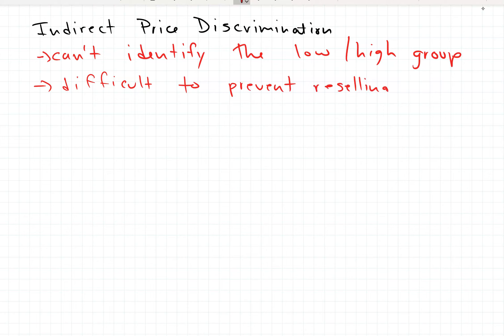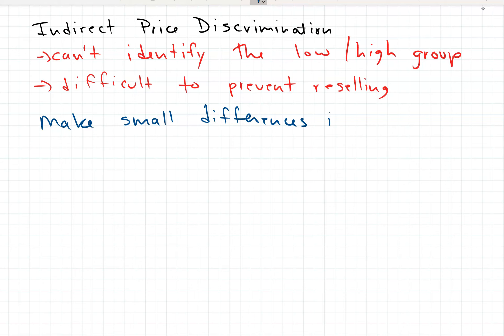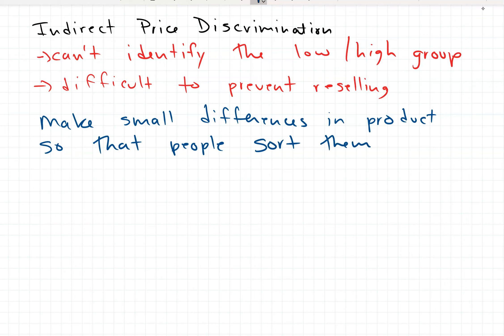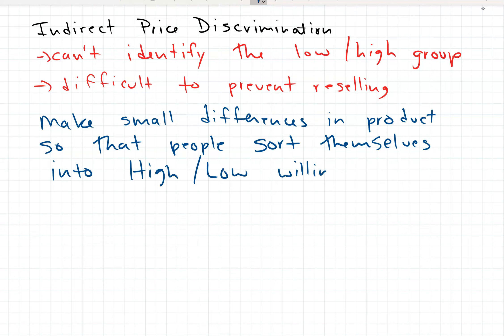Indirect price discrimination is when you make small differences in the product — this is often done with physical products but can also apply to services — so that people sort themselves into high willingness to pay and low willingness to pay groups. They choose for themselves, and that choice sorts them into these two groups.